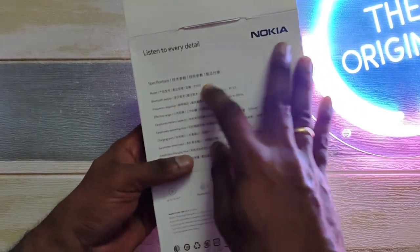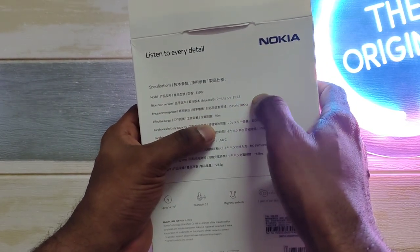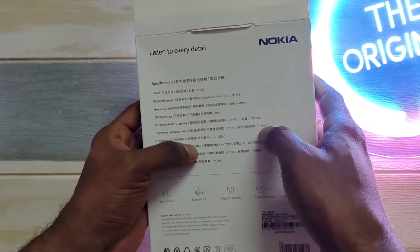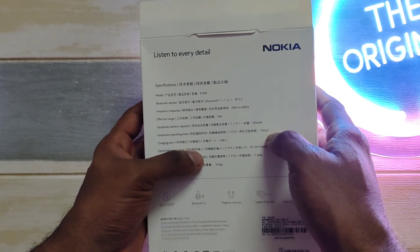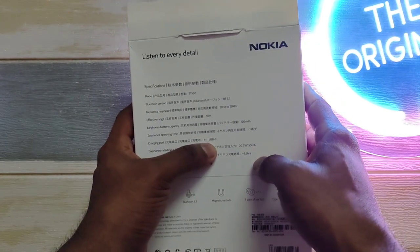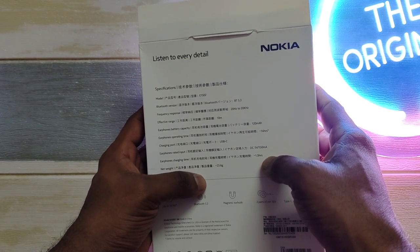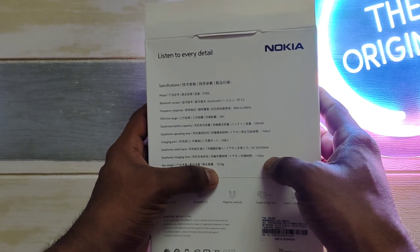As you can see, it's written here that this is the E1502, comes with the latest Bluetooth 5.3 and effective range is still at 10 meters. The battery size is 120 mAh. It should last up to 14 hours. It can charge via USB-C and it takes about one and a half hours to charge and it is relatively light at 23 grams.